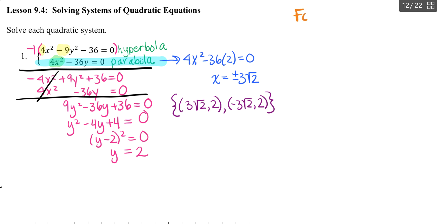So for the graphing calculator, we have to solve for y. So taking my first equation there, I have my 4x squared minus 9y squared minus 36 equals 0. So solving for y, I'm going to get negative 9y squared equals negative 4x squared plus 36.